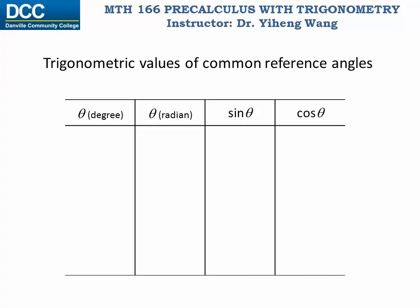For the first column, we list the special angles from smallest to largest: 0°, 30°, 45°, 60°, and 90°. You might notice that 0° and 90° are not acute angles, but they are special angles and memorizing their trigonometric values is very useful. For the second column, we convert these angles into radians: 0, π/6, π/4, π/3, and π/2.